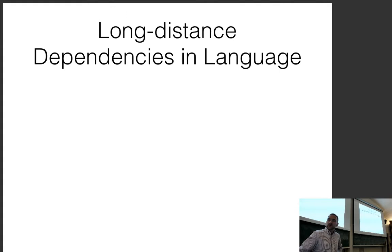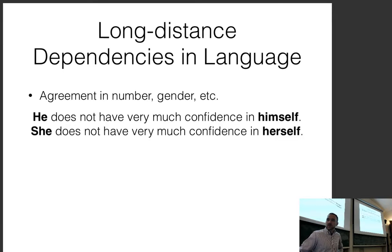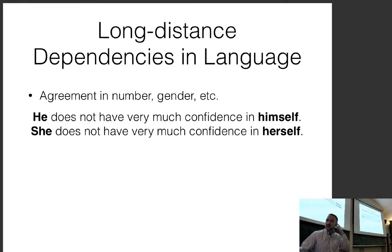There are also long-distance dependencies in language — agreement in number, gender, etc. For example: 'He does not have very much confidence in himself' versus 'She does not have very much confidence in herself.' You would need to remember 'he' or 'she' from long ago to figure out which word to pick next.